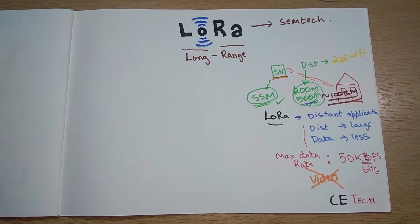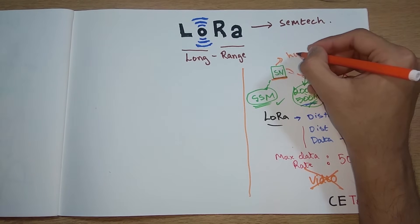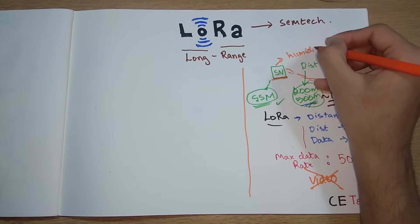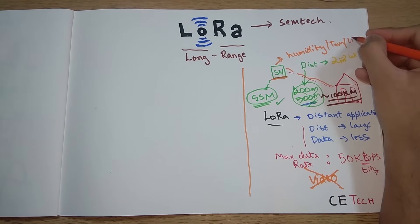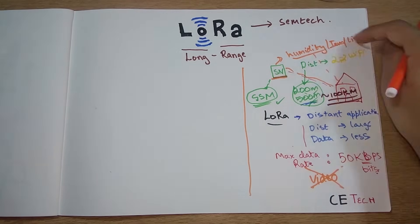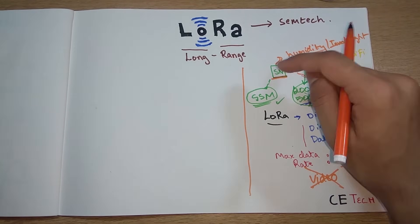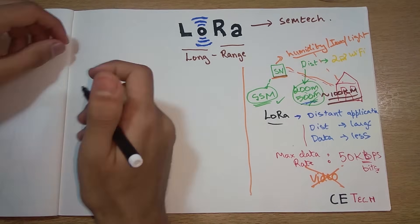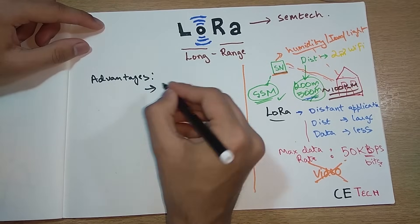Things like video transmission is not possible, but what is possible is transferring sensor data. So sensor may be a humidity sensor, or a temperature sensor, or a light sensor. This type of data doesn't change very rapidly in certain conditions, so there you can apply LoRa.